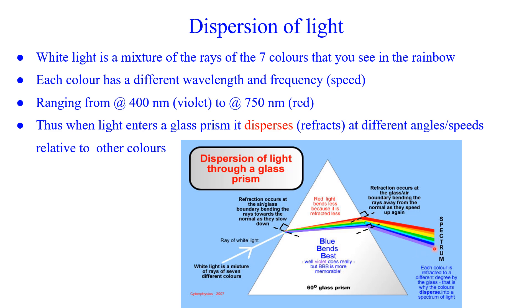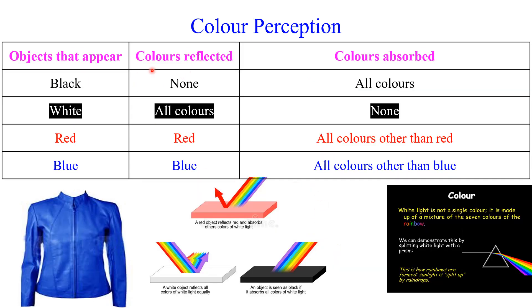At the bottom of the rainbow, at the lower energy, lower frequency, we have the violets. We have the greens in the middle, and we have the reds at the highest frequency. What's happening is this light disperses and refracts at different angles based on their relative level of energy.